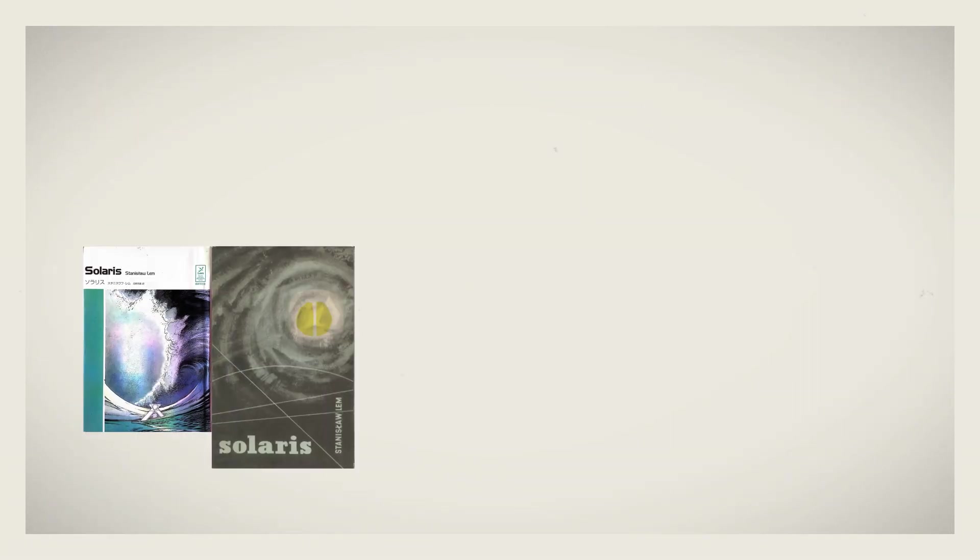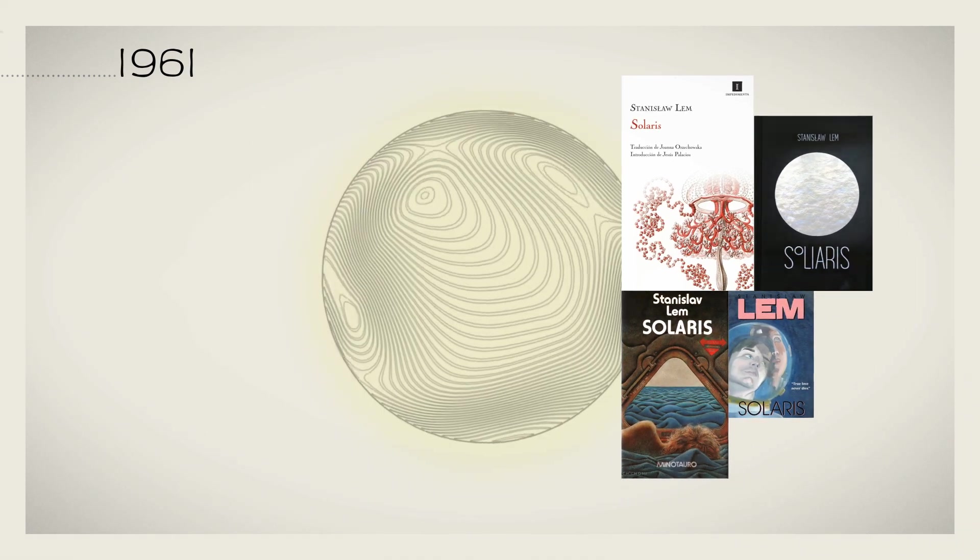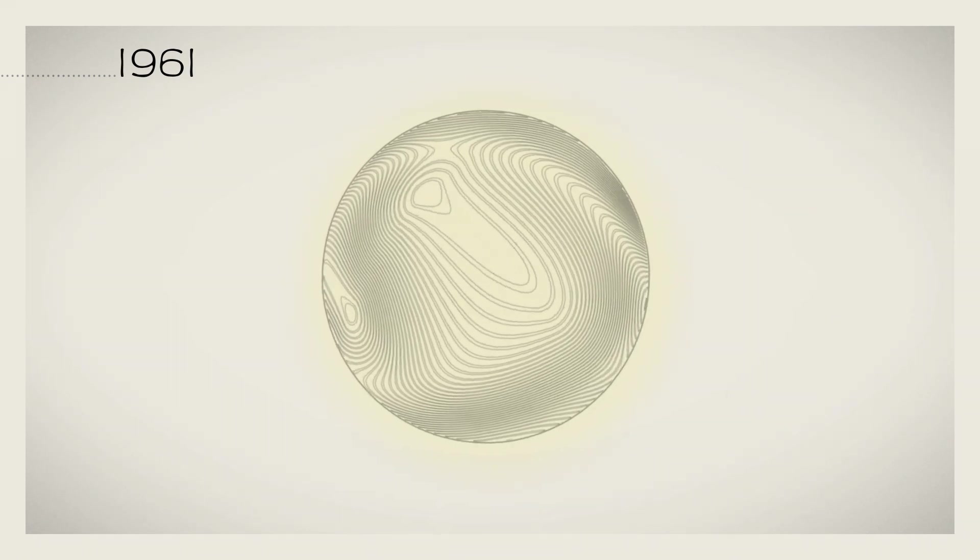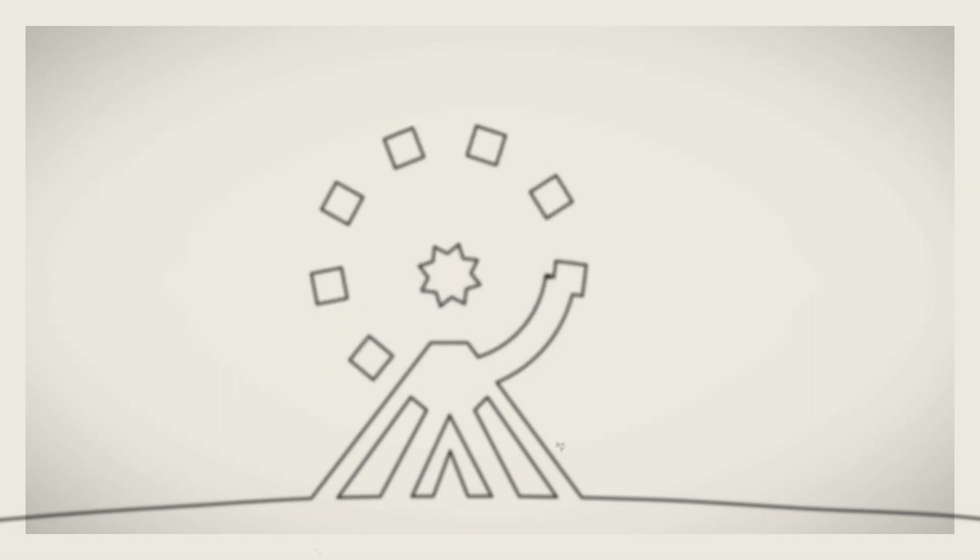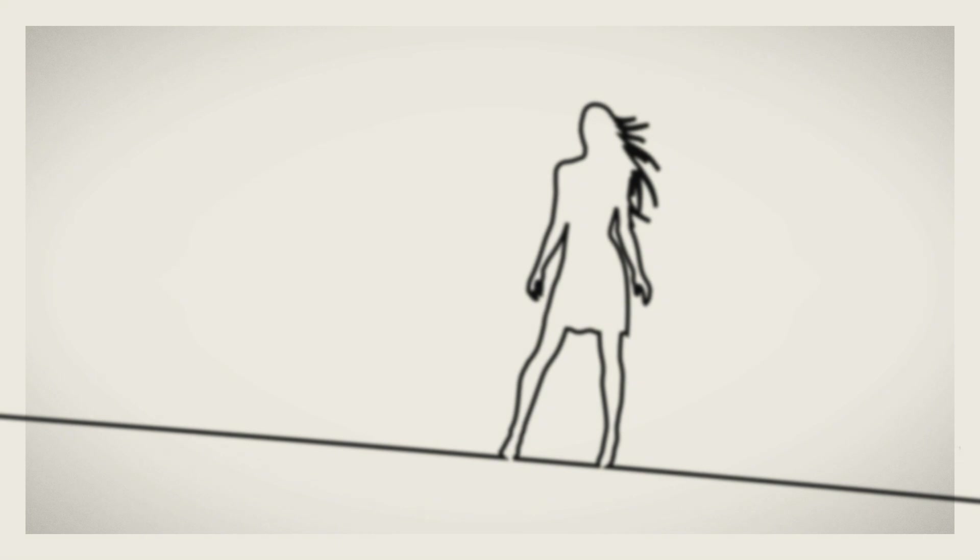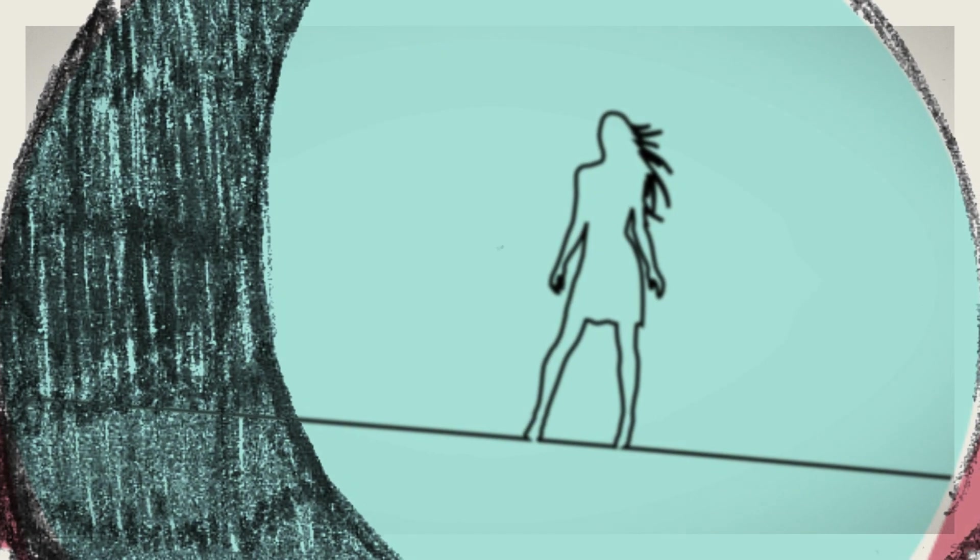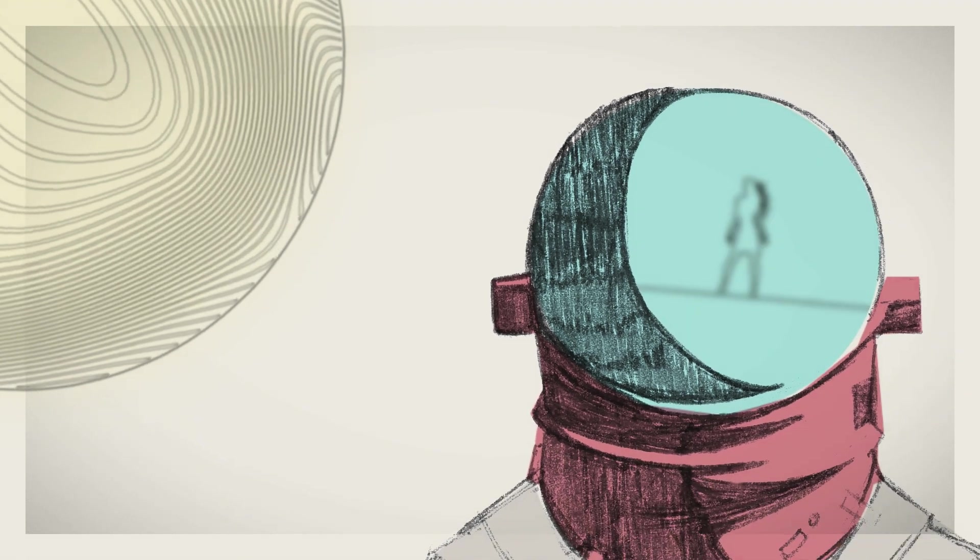In a novel published in 1961, Solaris is a planet covered by a single ocean that is constantly changing itself. It's a gigantic sentient being that manifests itself by the emergence of enormous complicated structures. The biggest ones are three dimensional representations of mathematical formulae. The smaller ones are copies of human structures taken from the memories of the scientists on a study mission to the planet. Solaris is capable of thinking, but its attempts at communication are beyond our comprehension.